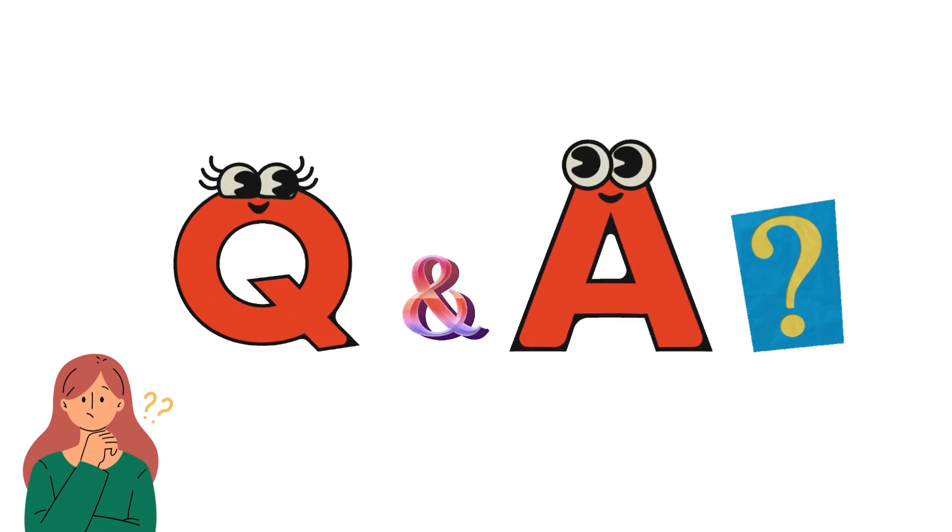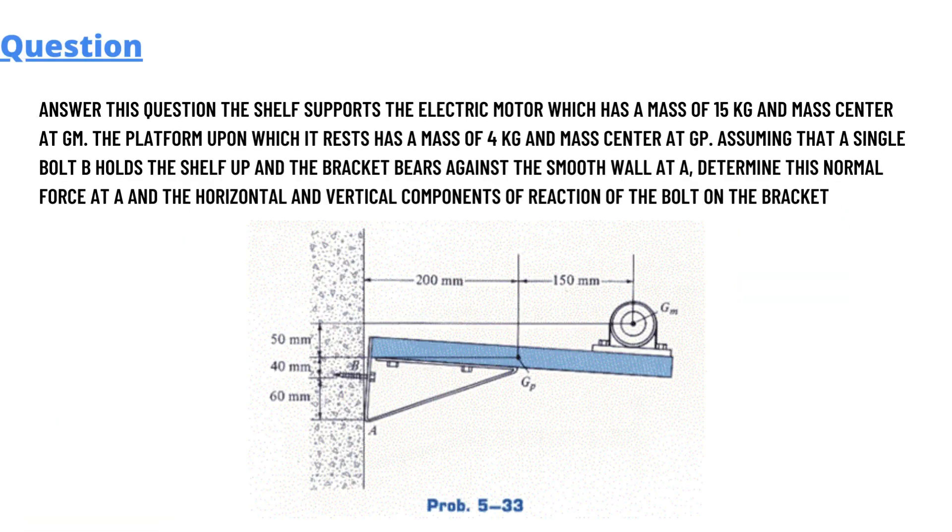So for today's question which we will be discussing: the shelf supports the electric motor which has a mass of 15 kg and the mass center at GM point. Basically GM is the middle point in the picture.